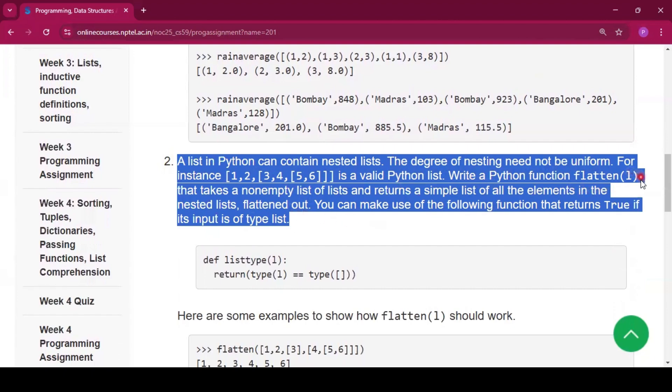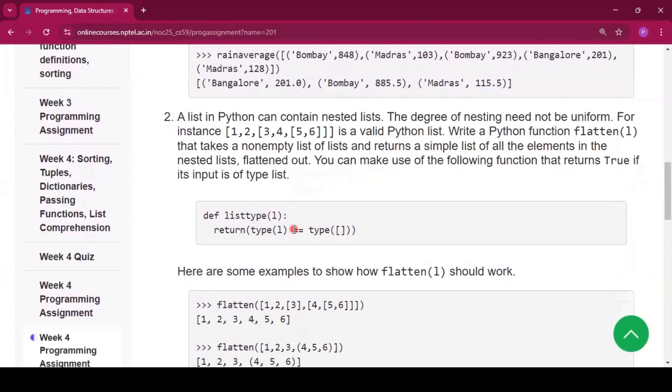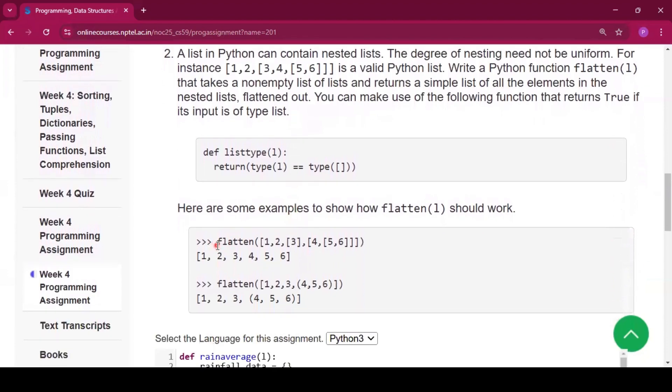Write a Python function flatten() that takes one non-empty list and returns a simple list of all the elements in the nested list. Now from the example, we can understand it better. That is, we have to write one function called flatten and it will take a list and give a list which is not nested. We have to write a function flatten that will return one list. Now we know that list means the element inside the third bracket or the square bracket in case of Python.